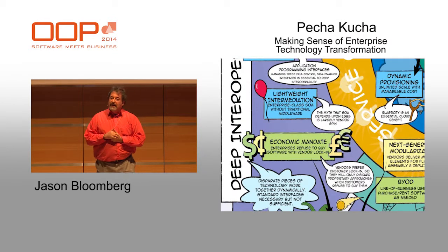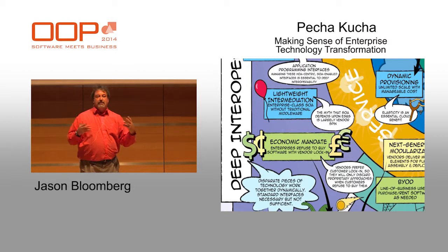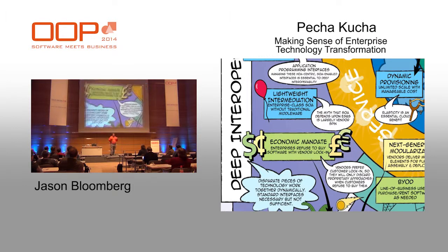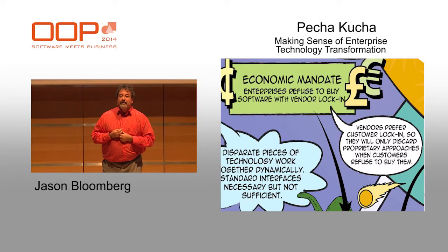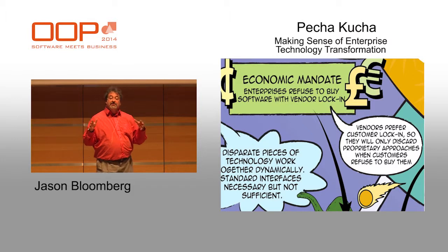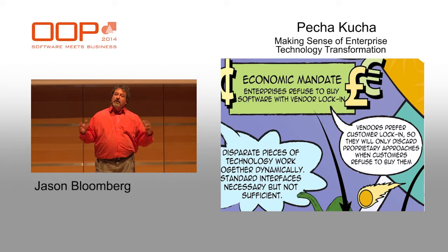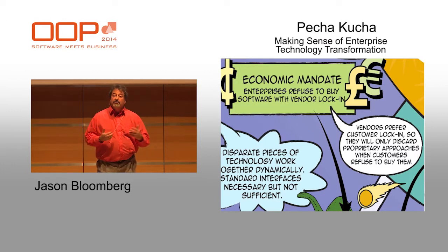The lower left-hand quadrant is deep interoperability, essentially the modem negotiation model for interoperability — two pieces of software should be able to actively negotiate with each other to determine how to interoperate. So interoperability is no longer a static principle but an active one. Also in this super trend is the economic mandate: as organizations realize they can get software that is open standards-based and open source, they no longer need to buy software that gives them vendor lock-in. Vendors will stop making that kind of software if customers stop buying it.